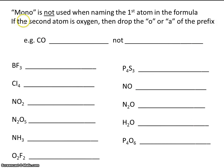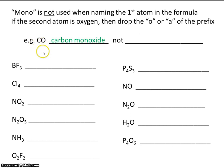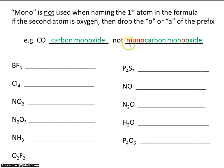Here's another fairly simple rule: the word "mono" is not used when naming the first atom in the formula. Also, if the second atom is oxygen, then we drop the O or the A of the prefix. For example, you probably already recognize CO as carbon monoxide. Notice what you did not say — you did not say "monocarbon monoxide." You dropped the mono on the first element, and you also dropped the vowel of the prefix, so it's "monoxide," not "mono-oxide."